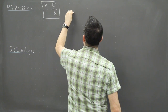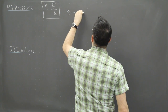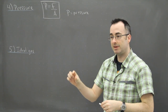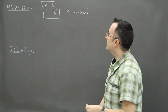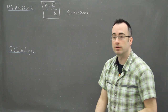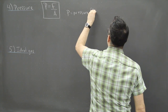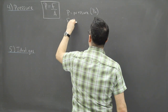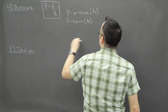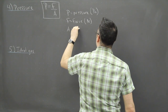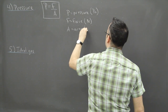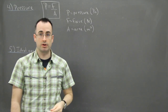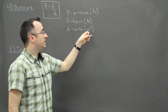P in this case would be the pressure. It's unfortunate that we use P for so many different things — P is for power, lowercase p is also momentum — but in this case we mean P is pressure. Pressure is measured in pascals. F is the force, measured in newtons, and A is the area the force is applied on, measured in meters squared. So pressure can also be expressed in newtons per meter squared.